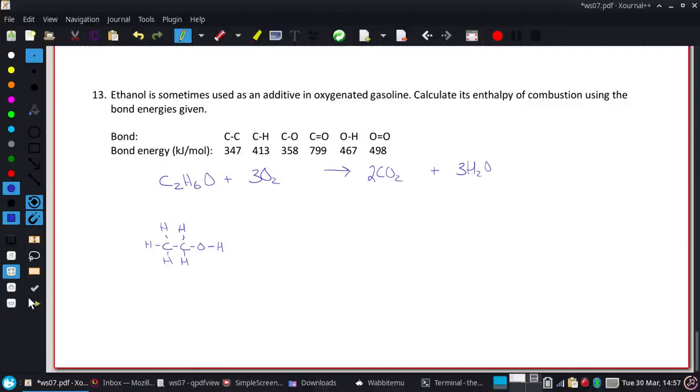All right, now the nice thing about putting down my Lewis structures is they're going to help me determine the number of bonds I am going to be breaking and forming. Because that's what's actually happening when we're doing a chemical reaction. We're breaking and forming bonds.